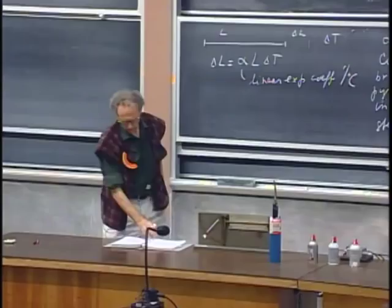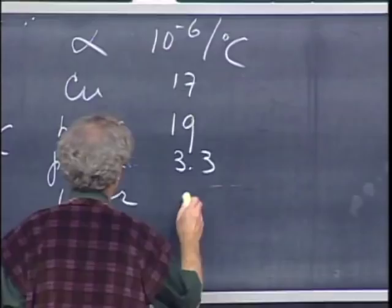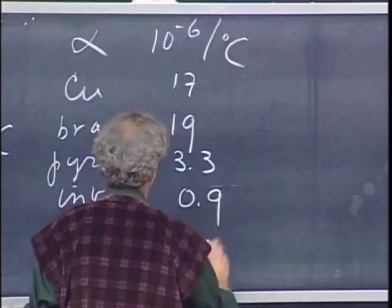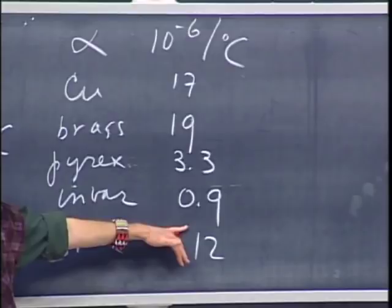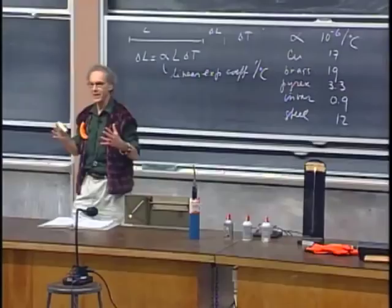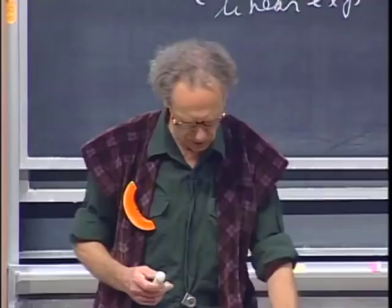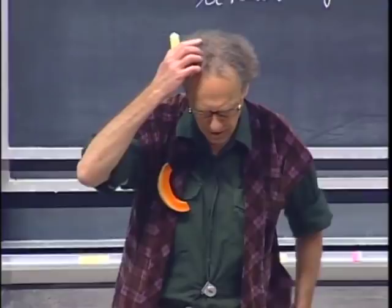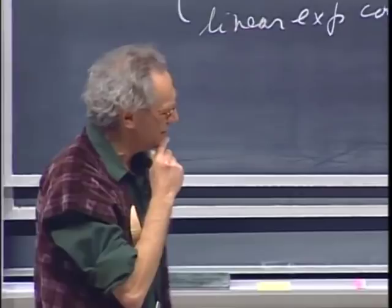The various values for alpha differ a great deal. Some values in units of 10 to the minus 6 per degree centigrade: brass is about 19, copper is 17, pyrex is 3.3, invar is 0.9, and steel is roughly 12. Invar was a great invention — it has a very low expansion coefficient, which was very important in the 19th century to make instruments like clocks very precise. Invar is a mixture of 64% iron and 36% nickel, invented by physicist Guillaume in 1898, for which he received the Nobel Prize in 1920.